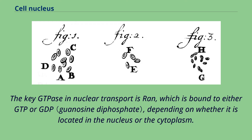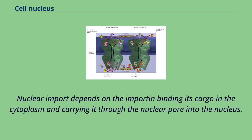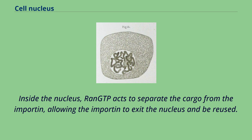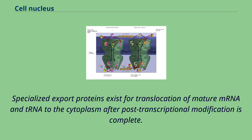Whereas importins depend on RAN-GTP to dissociate from their cargo, exportins require RAN-GTP in order to bind to their cargo. Nuclear import depends on the importin binding its cargo in the cytoplasm and passing it through the nuclear pore into the nucleus. Inside the nucleus, RAN-GTP acts to separate the cargo from the importin, allowing the importin to exit the nucleus and be reused. Nuclear export is similar, as the exportin binds the cargo inside the nucleus in a process facilitated by RAN-GTP, exits through the nuclear pore, and separates from its cargo in the cytoplasm. Specialized export proteins exist for translocation of mature mRNA to the cytoplasm after post-transcriptional modification is complete.